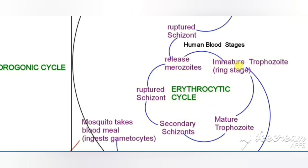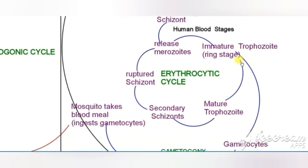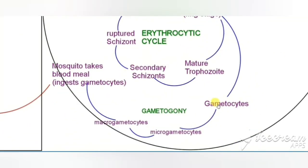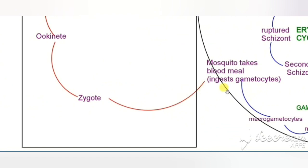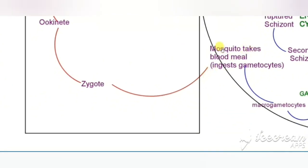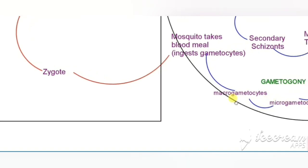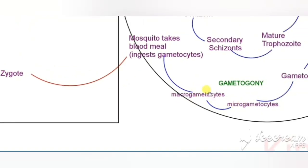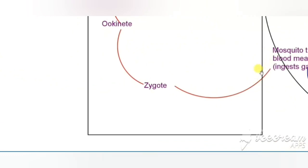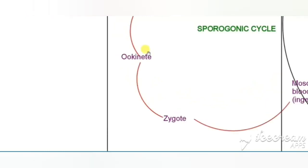This erythrocytic schizogony will continue for 2 to 3 cycles, and some of the trophozoites would be converted into micro and macro gametocytes. This is called gametogony, the process of formation of gametocytes. Next is the sporogony, the sexual cycle of the parasite. When the mosquito ingests blood from human beings, it also ingests the male and female gametocytes — the micro and macro gametocytes. These two will unite in the midgut of the mosquito to form a zygote.